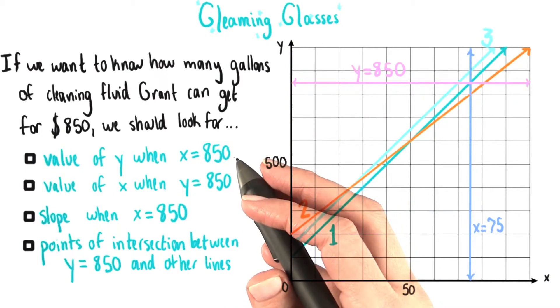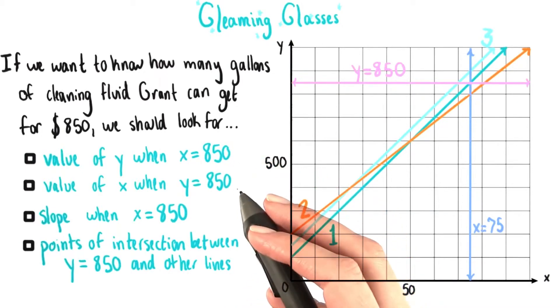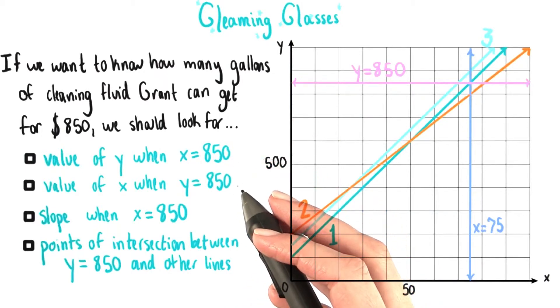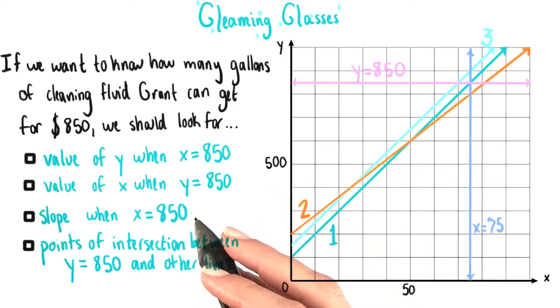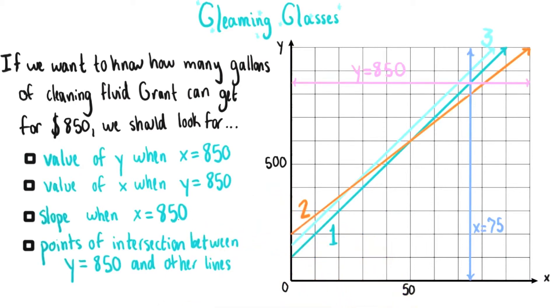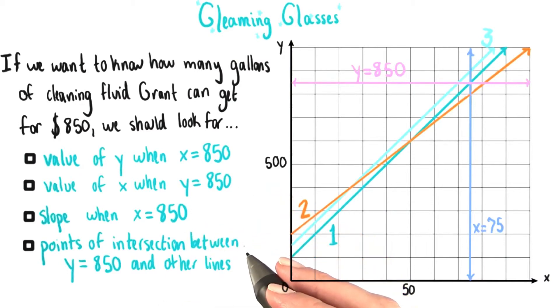The value of y when x equals 850, the value of x when y equals 850, the slope when x equals 850, or points of intersection between y equals 850 and other lines.